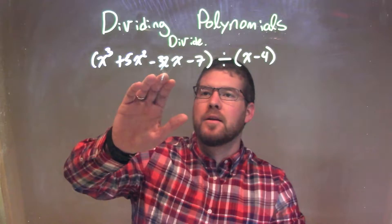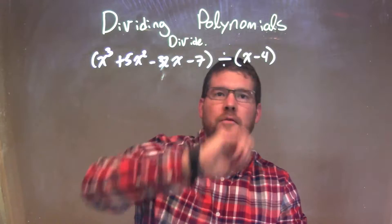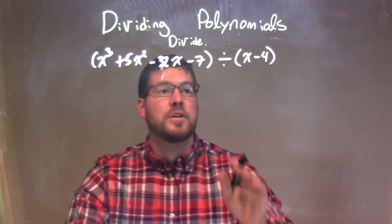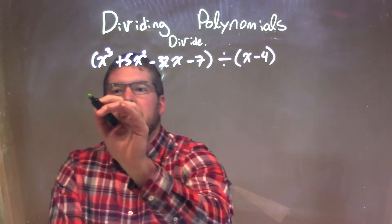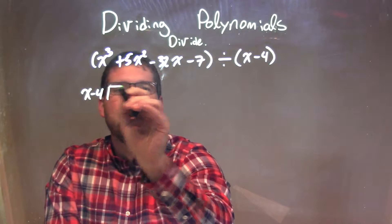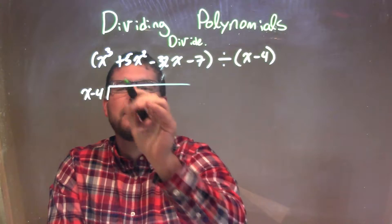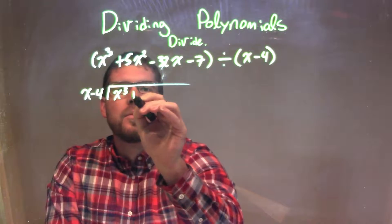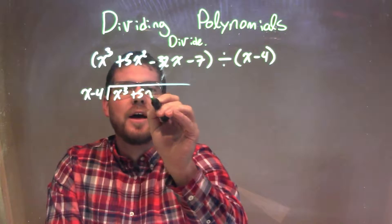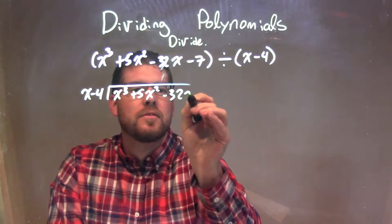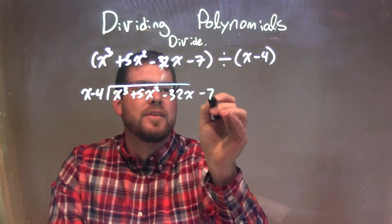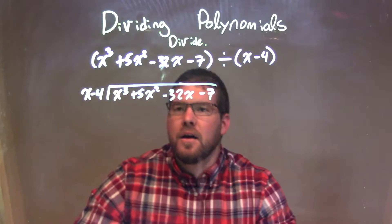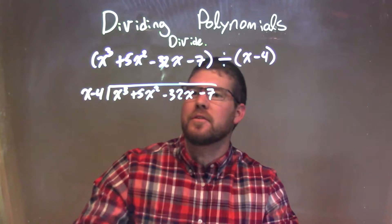So now I have my dividend and my divisor. I'll rewrite that into long division. So I'll take my x minus 4 right here and I'll go into my dividend, which is x to the third plus 5x squared minus 32x minus 7. And let's make that long division part longer.